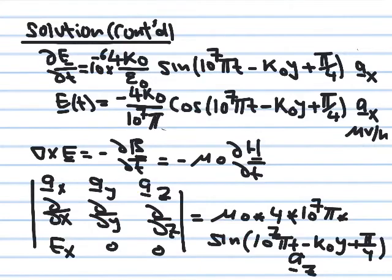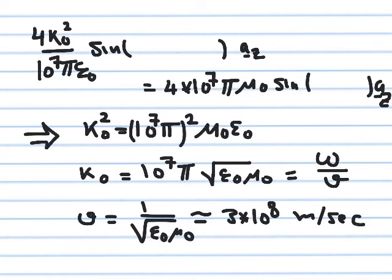To summarize the four negatives: one comes from the electric field expression itself, one from minus partial E_x partial y in the curl expansion, one from the derivative of cosine being minus sine, and the fourth from differentiating the angle, since the derivative of minus k_naught y is minus k_naught.